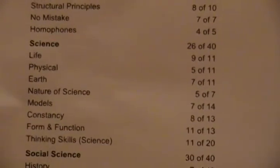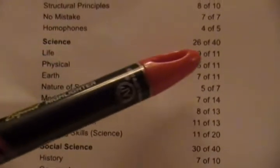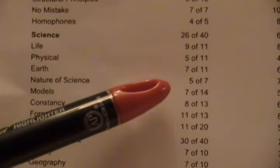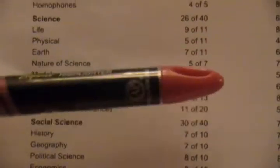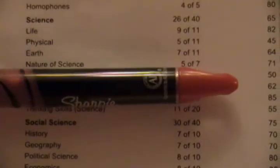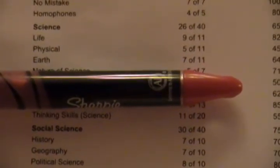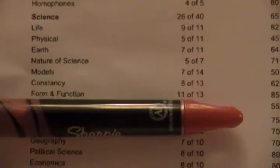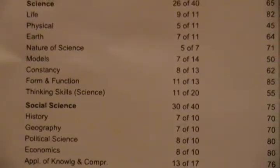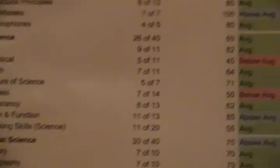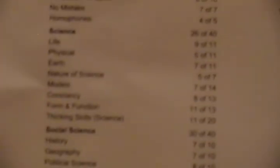Okay, so science — there are 40 problems. If you add up 11, 11, 11, and 7, those are the problems that are on the test. The rest of them are just kind of embedded in there. Those are just basic science questions: life science, physical science, earth science, nature of science, the models.